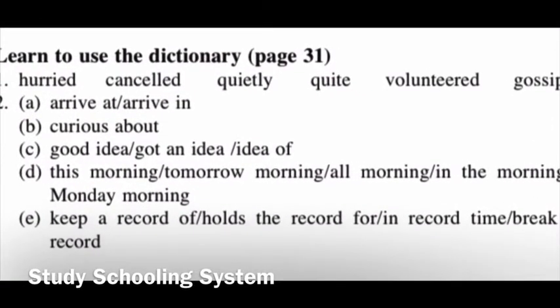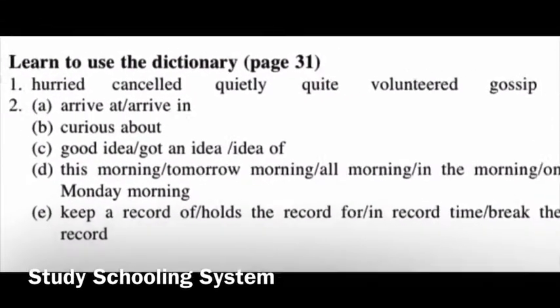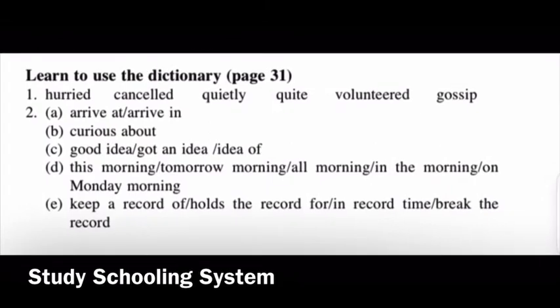Here are all the answers for learn to use a dictionary, including number one and number two. For part C: good idea, gotten idea, or idea of. For part D: this morning, tomorrow morning, all morning, in the morning, on Monday morning. For part E: keep a record of, holds the record of, in record time, break the record. All these words are used in different contexts but are common and found in the dictionary.